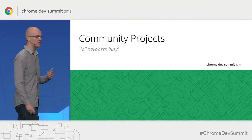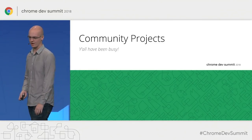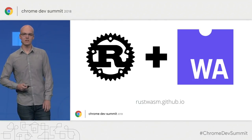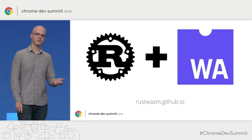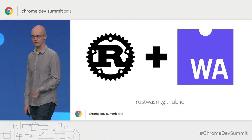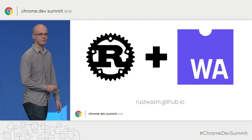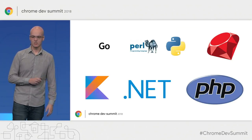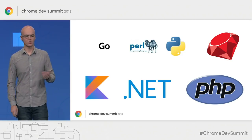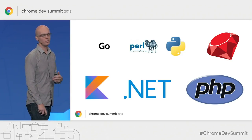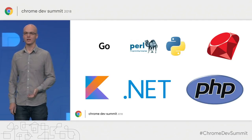I want to close off my segment by talking about some of the amazing community projects out there. The first is the awesome work done by the Mozilla team and the Rust community to bring Rust to the web through WebAssembly. They have an awesome set of tools and materials to help you get started, available at rustwasm.github.io. We've also seen more than 30 different projects trying to bring other languages to the web through WebAssembly, including Perl, Python, Ruby, Kotlin, OCaml, Go, PHP, and the .NET framework.